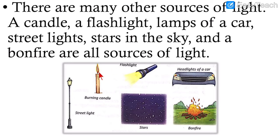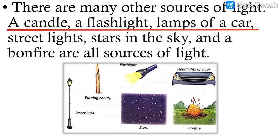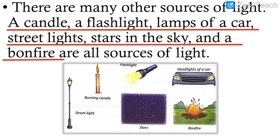Which are the sources of light? Around six sources of light are shown in the image. They are: a burning candle, a street light, a flashlight, stars, headlights of a car, and a bonfire. A candle, a flashlight, lamps of a car, street lights, stars in the sky, and a bonfire are all called sources of light — they give us light.